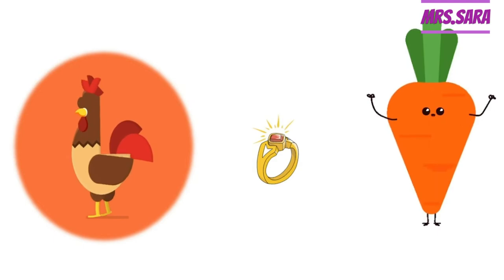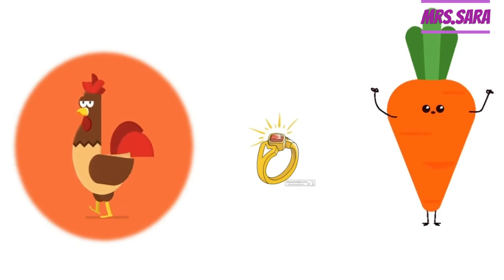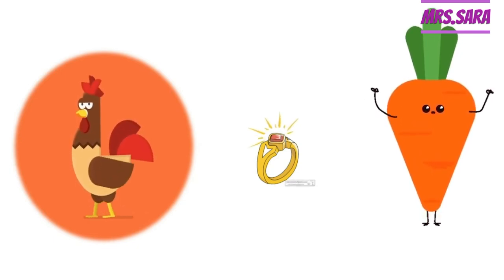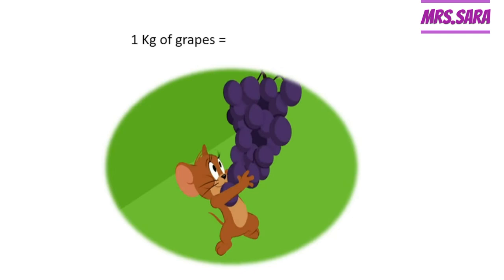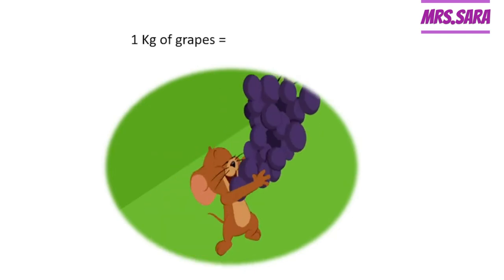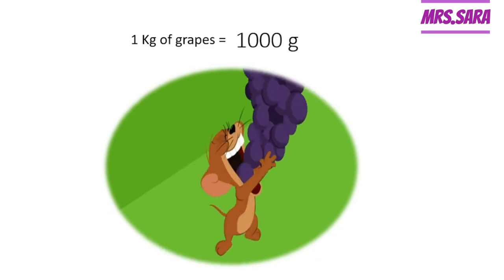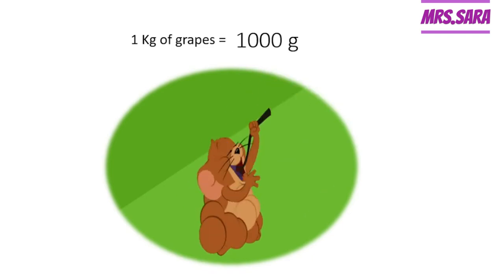How about the carrots? Carrot is a vegetable, so carrot is a big mass, so we will use a common balance. If we have 1 kilogram of grapes, how many grams are in 1 kilogram of grapes? So 1 kilogram of grapes equals 1000 grams of grapes.